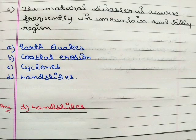Next question: which natural disaster occurs frequently in mountain and hilly regions? Option A earthquakes, option B coastal erosion, option C cyclones, option D landslides. The correct answer is option D landslides.